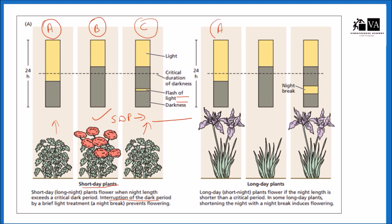Long day plants require a long period of sunlight and short period of darkness for flowering. In case A, long day plants flower when the night length is shorter than the critical period, so it will flower. In case B, the dark period is more than the critical period, so the long day plant will not flower. In case C, the dark period is interrupted by a beam of light, and it will flower because long day plants require a long period of sunlight for flowering.